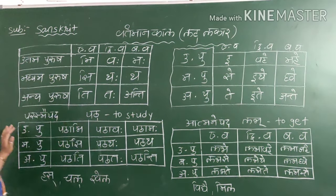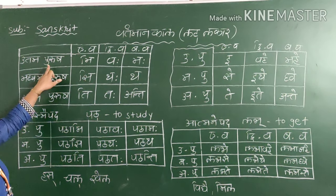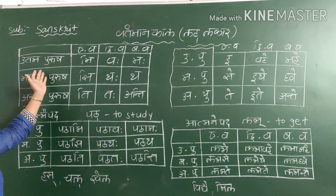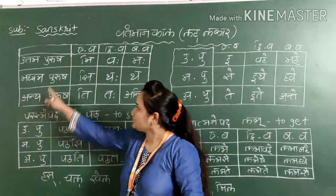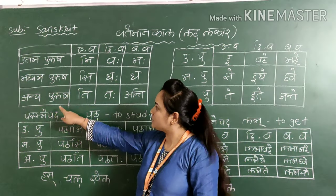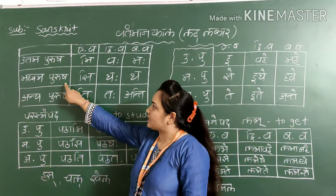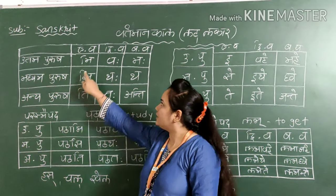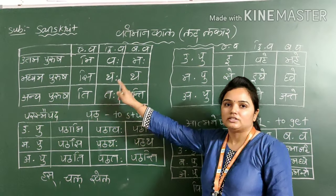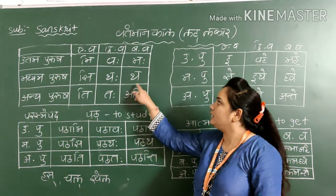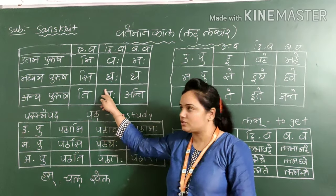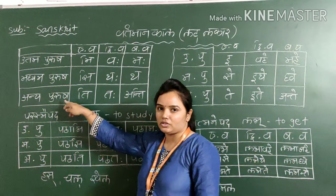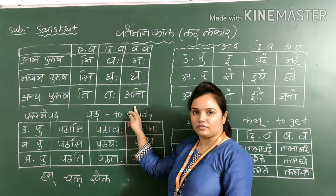Look here. This is the table of Parasmapad. Here, you all know that earlier we have seen three types of Purush and three types of Vachan: Uttam Purush, Madhyam Purush, Anyam Purush — meaning first person, second person, third person. Ek Vachan, Dvivachan, and Bahuvachan — singular, dual, and plural. In Sanskrit, Dvivachan (dual) is also there, and three Purush are also there. So now we will see the table.